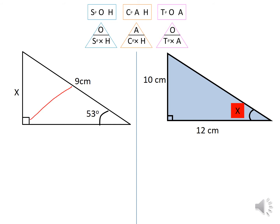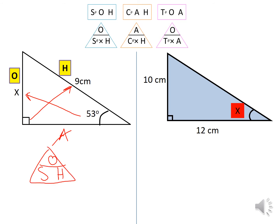Opposite the right angle is the hypotenuse, opposite the angle is the opposite side, and we're left over with the adjacent. We don't need the adjacent because it doesn't have a missing length or value, so we need the opposite and hypotenuse. The formula that has opposite and hypotenuse is the sine formula, so we choose sine.